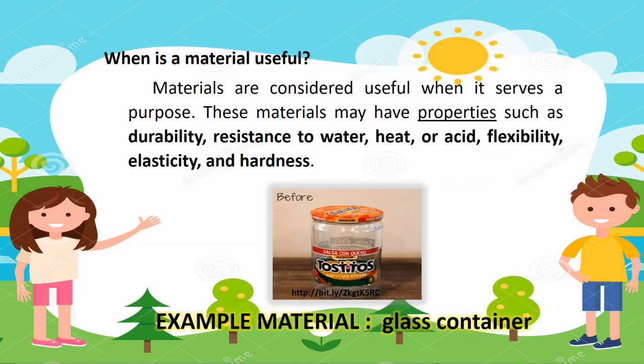When is a material useful? Materials are considered useful when it serves a purpose. These materials may have properties such as durability, resistance to water, heat or acid, flexibility, elasticity, and hardness. An example is a glass container.